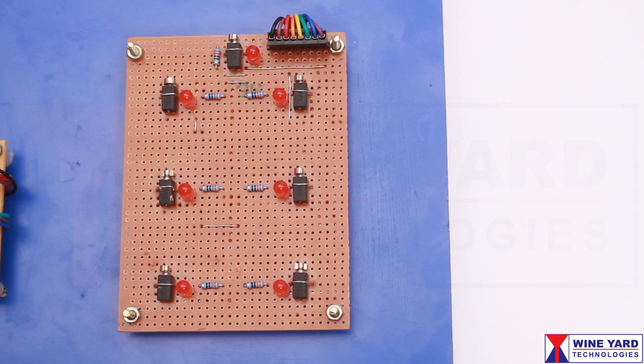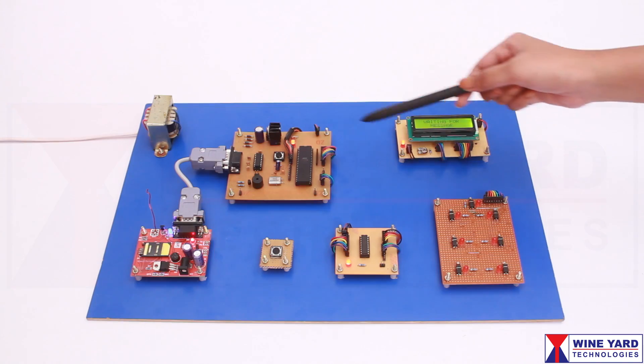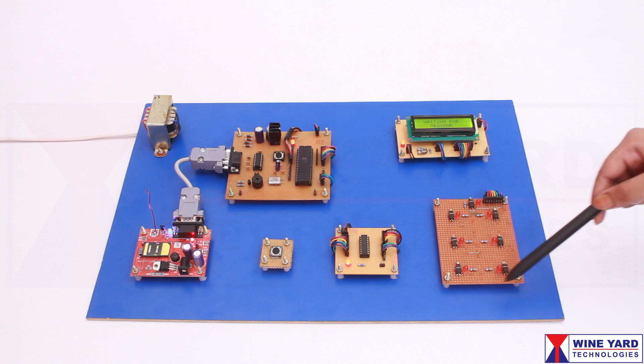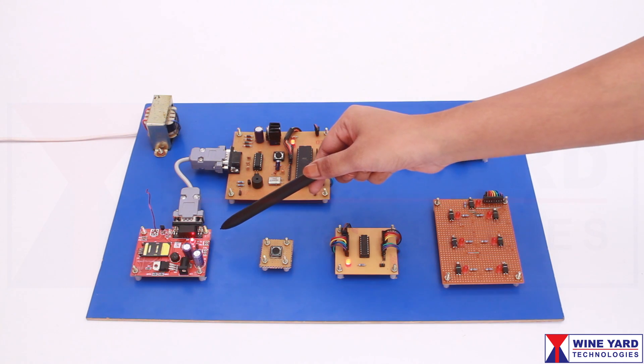These 7 vibration motors are interfaced to the microcontroller through this ULN driver. These 6 vibration motors represent the 6 tactile dots of the Braille system. This vibrator is to alert the user whenever the system receives a new message.